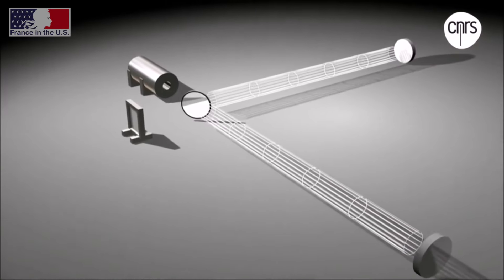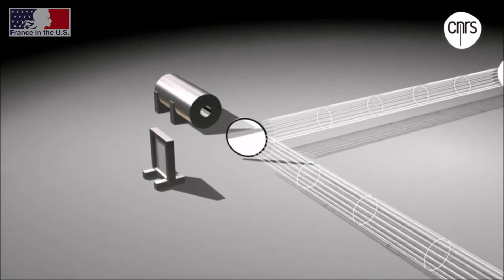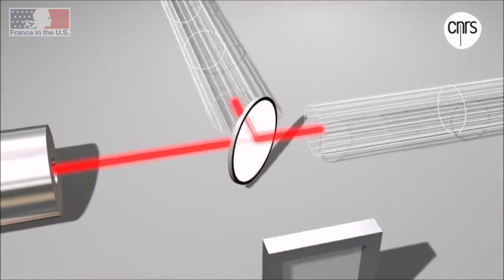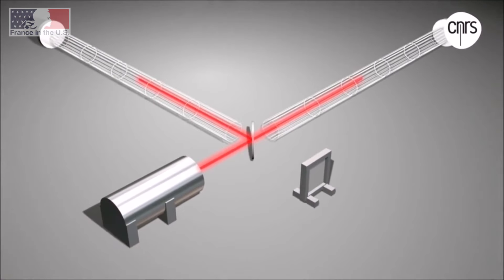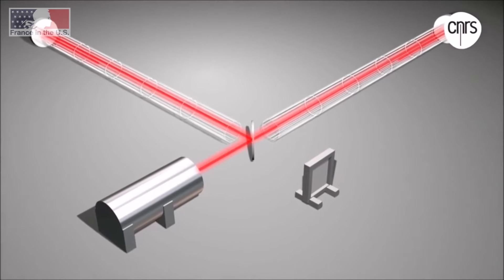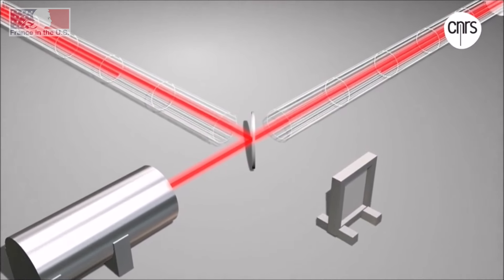What happens is that the gravitational wave passes through the instrument and it stretches the space-time. So what we do, we send a laser beam, a light beam, we split it in two parts.